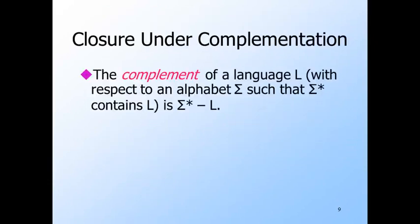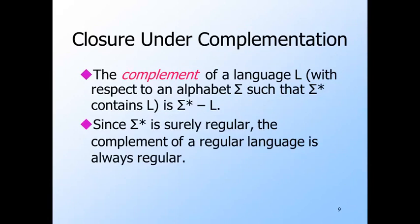The complement of a language is defined with respect to some alphabet sigma. Sigma has to include all the symbols from the alphabet of the language L, but may include other symbols that don't appear in L. Then the complement of L is all strings in sigma star that are not in L. Since sigma star is surely a regular language, and we know that regular languages are closed under difference, we immediately know that the complement of any regular language is also regular.